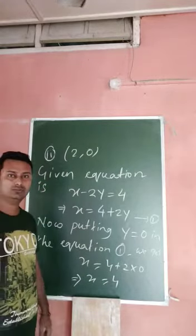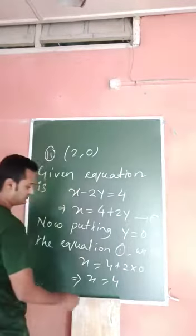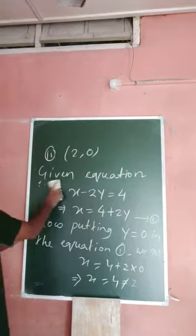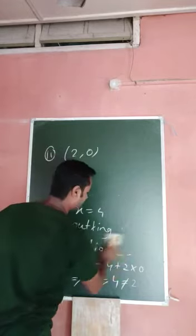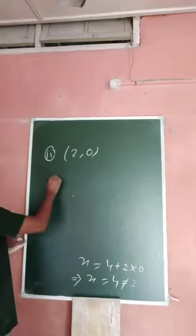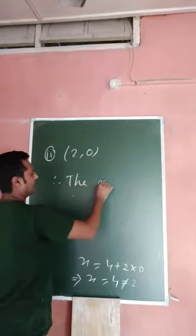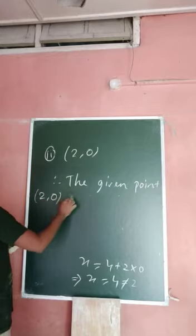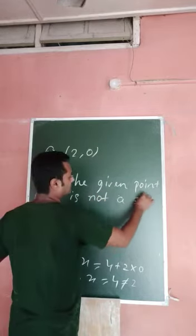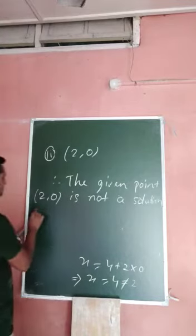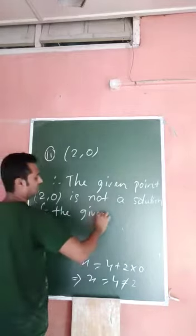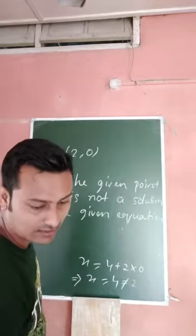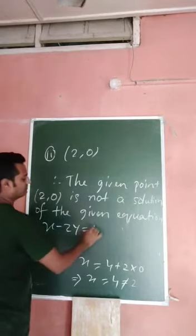But the given value of x is 2 here, and 4 is not equal to 2. Therefore, the given point (2, 0) is not a solution of the given equation x minus 2y equal to 4.